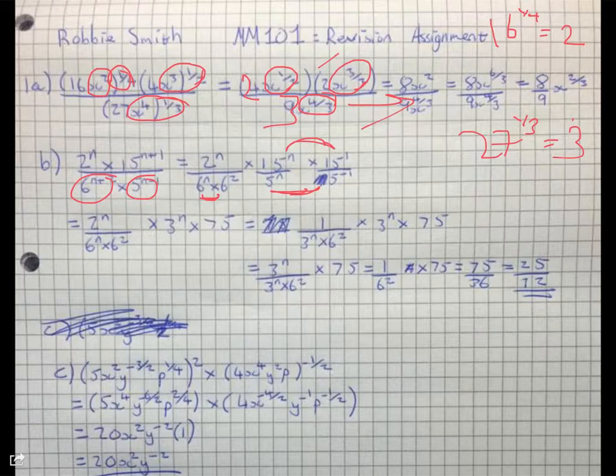And then you can, yep, so you get 15, what you've got here. So that's, yeah, 15 to the end is 3 to the end times 75. Yes, that's all good.